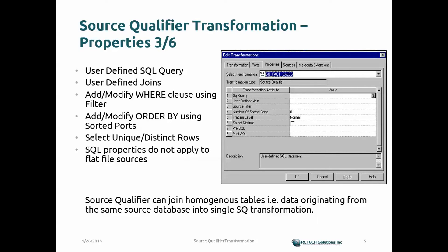The Source Filter allows you to apply a filter — for example, filtering customers within a specific geographical region or state. On top of that, you have Number of Sorted Ports where you can define sorted ports. For the Distinct value, when the source query returns multiple records or a Cartesian product, you can select only distinct values to avoid using memory unnecessarily.